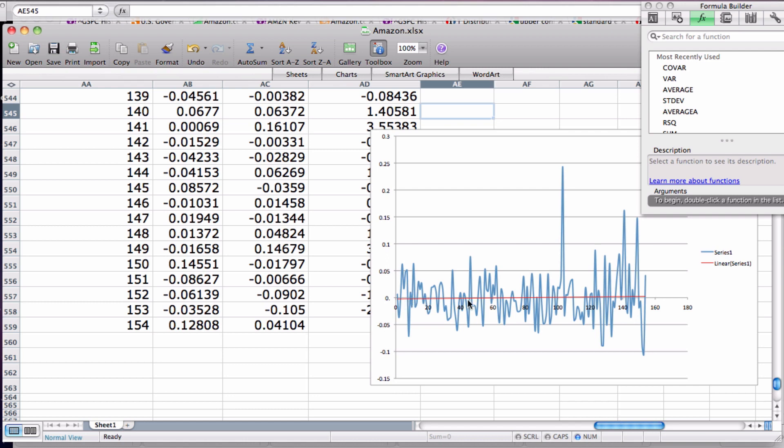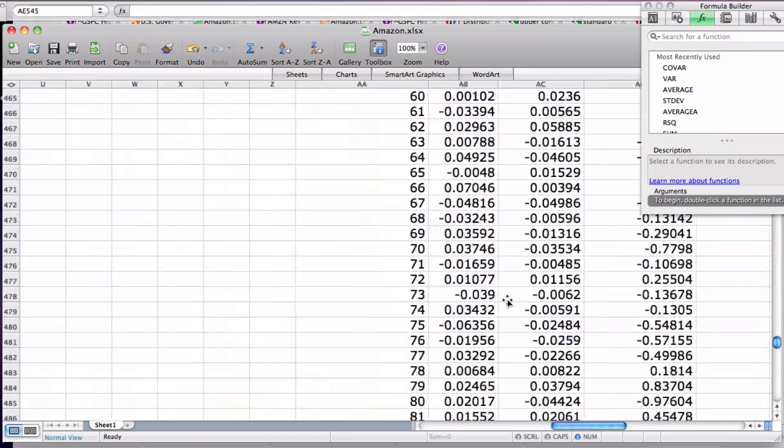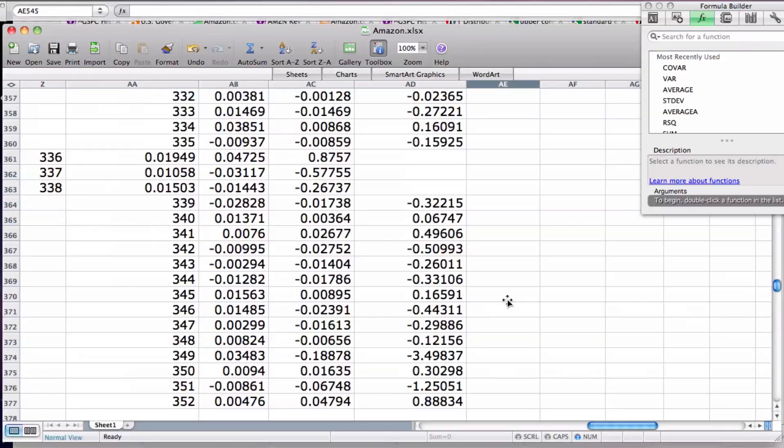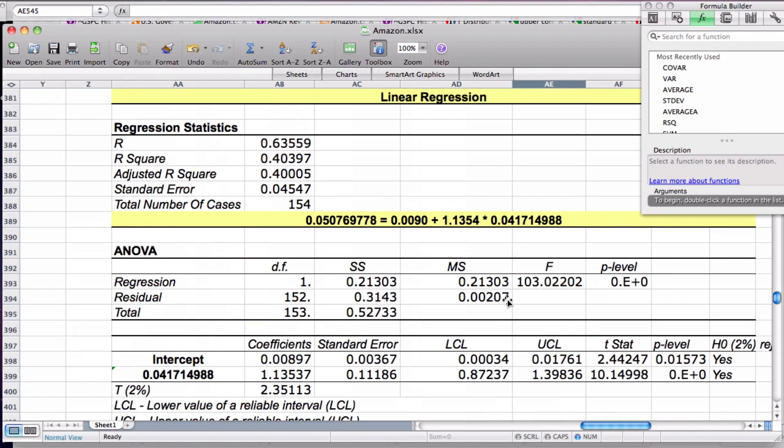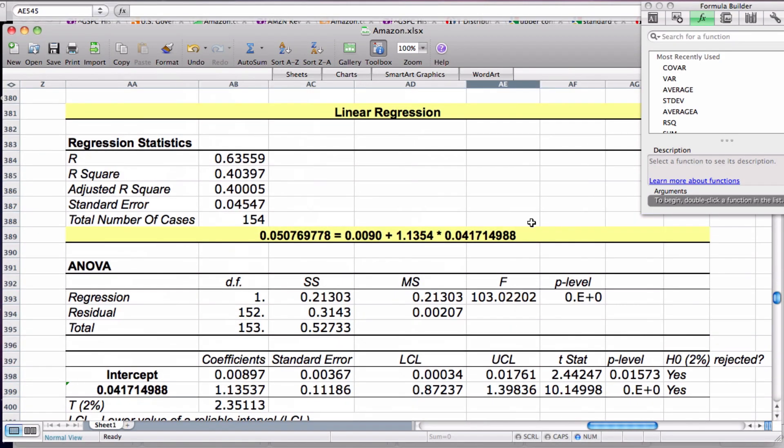Here we just have our trend line showing that there is pretty much no pattern or significant slopes. Hope that helped your analysis of linear regression results. Thanks. Bye.